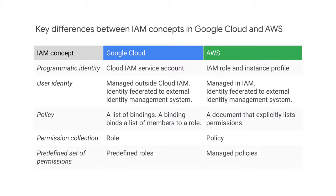Google uses predefined roles, which are built to match job roles. AWS has something similar called managed policies. Managed policies are JSON documents that group permissions by job roles.